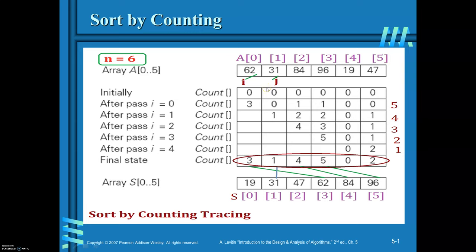In this example we have taken six elements in the array. Initially the count for every element is equal to 0, so it is set — count equals 0 for all elements of the array. Then i equals 0. Initially i equals 0, meaning 62 is to be compared with the remaining elements of the array. For that, set j equal to i plus 1, that is from 1 to n minus 1, varying j from 1 to 5.